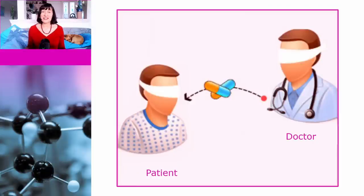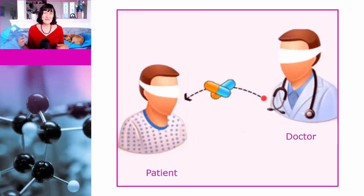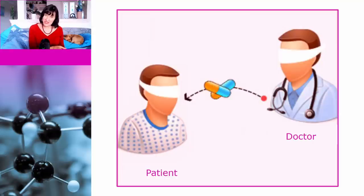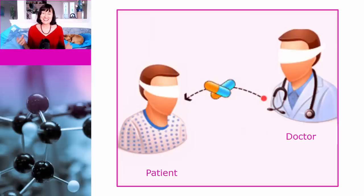It's because of the placebo effect that new treatments are evaluated using randomized double-blinded placebo-controlled trials. People are randomly assigned to one of two groups — this randomization step is critical because without it you don't know whether your two groups have differences that will affect their outcome. One group is given the treatment and the other group is given a tablet or whatever that looks identical to the treatment but doesn't actually contain any medication, otherwise known as a placebo.